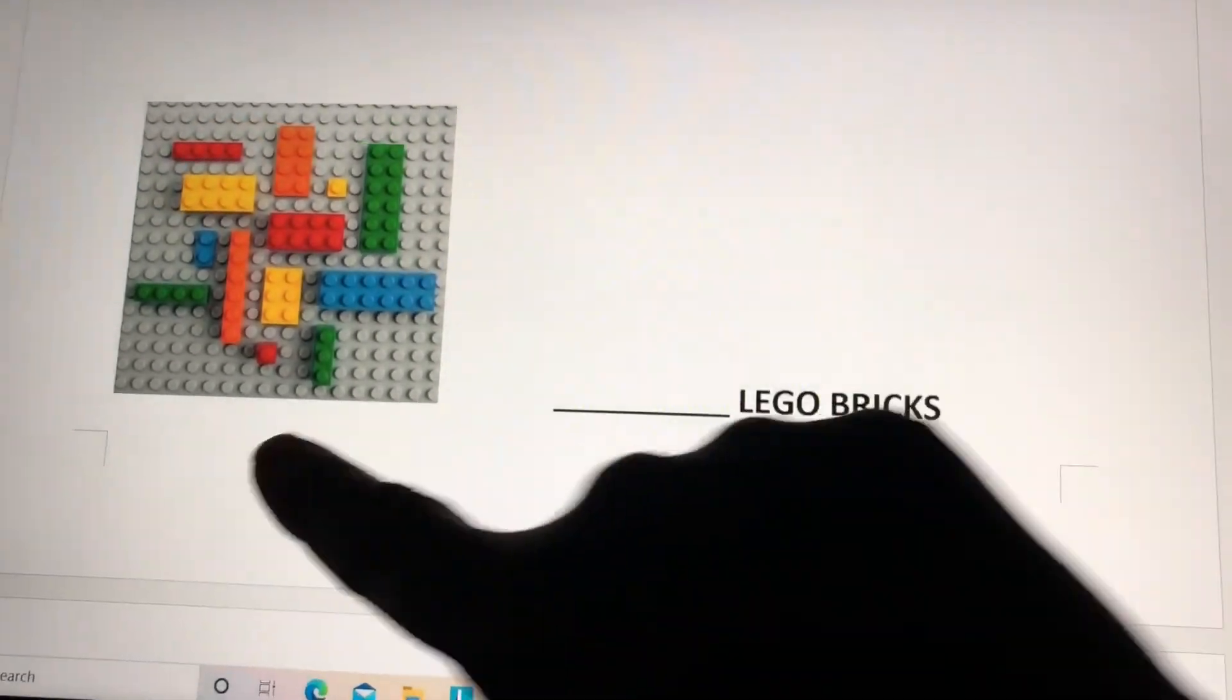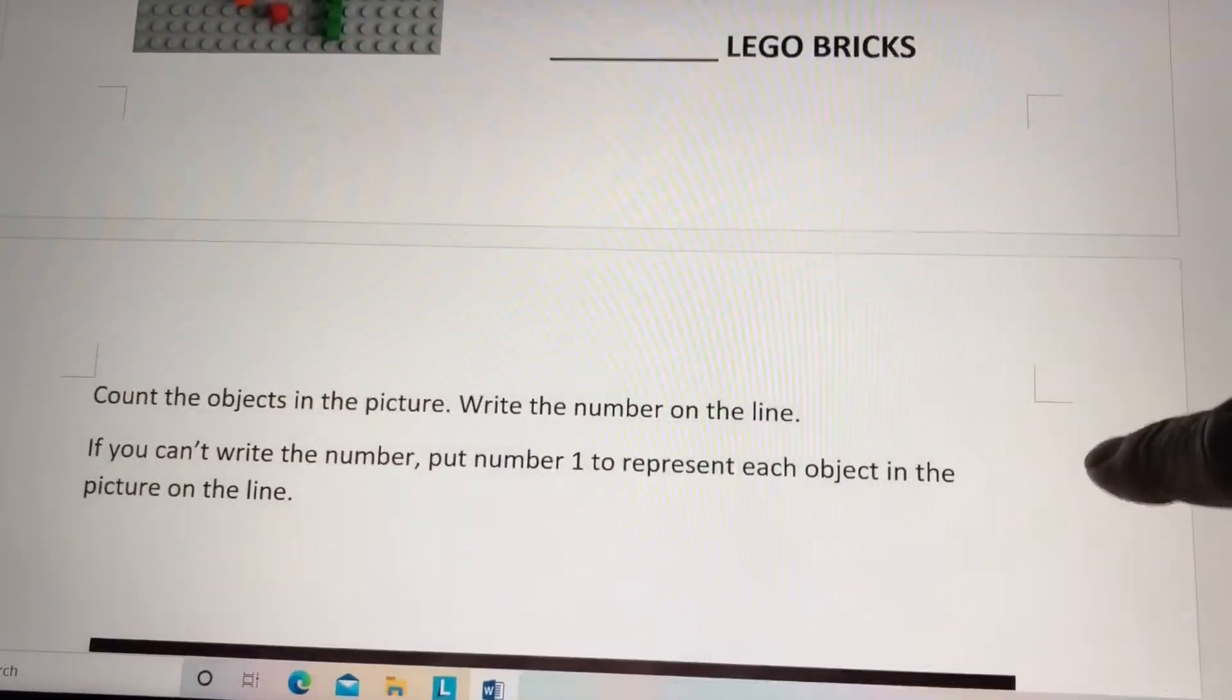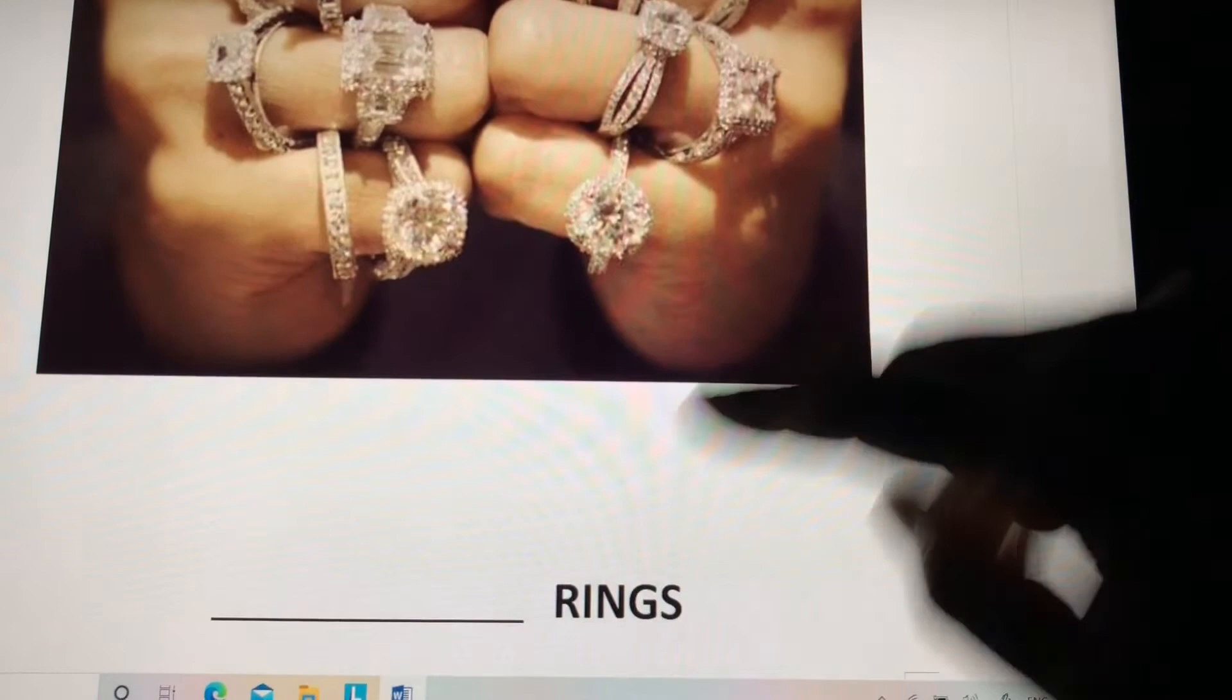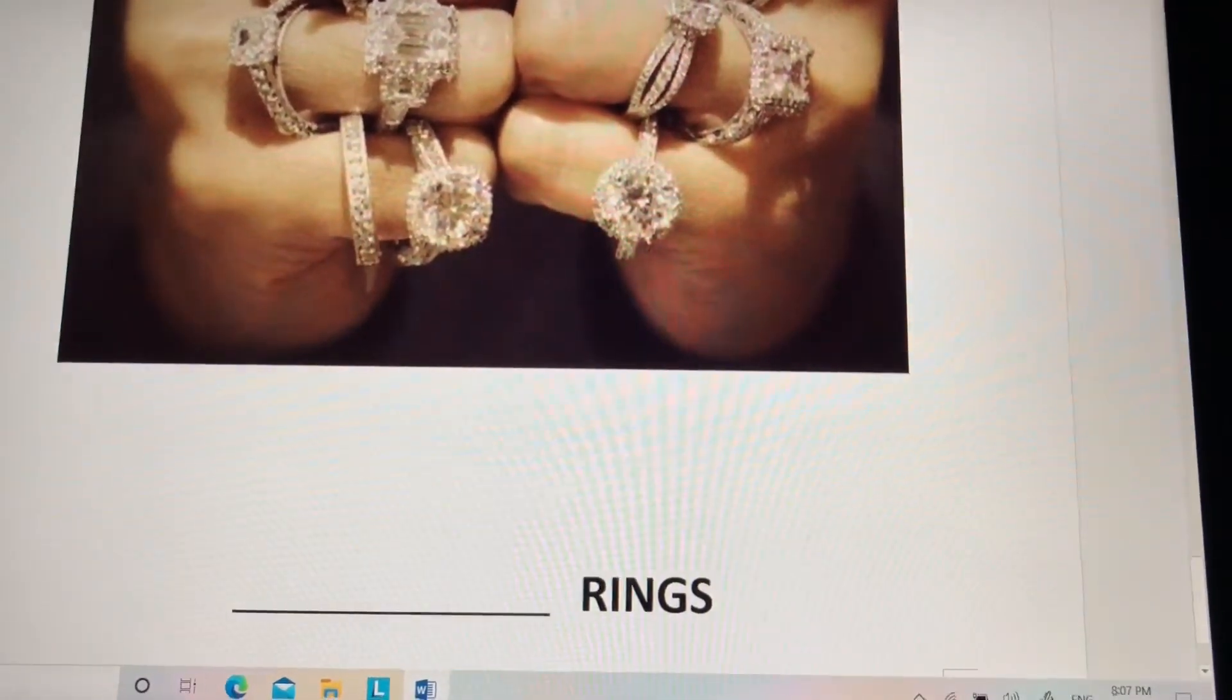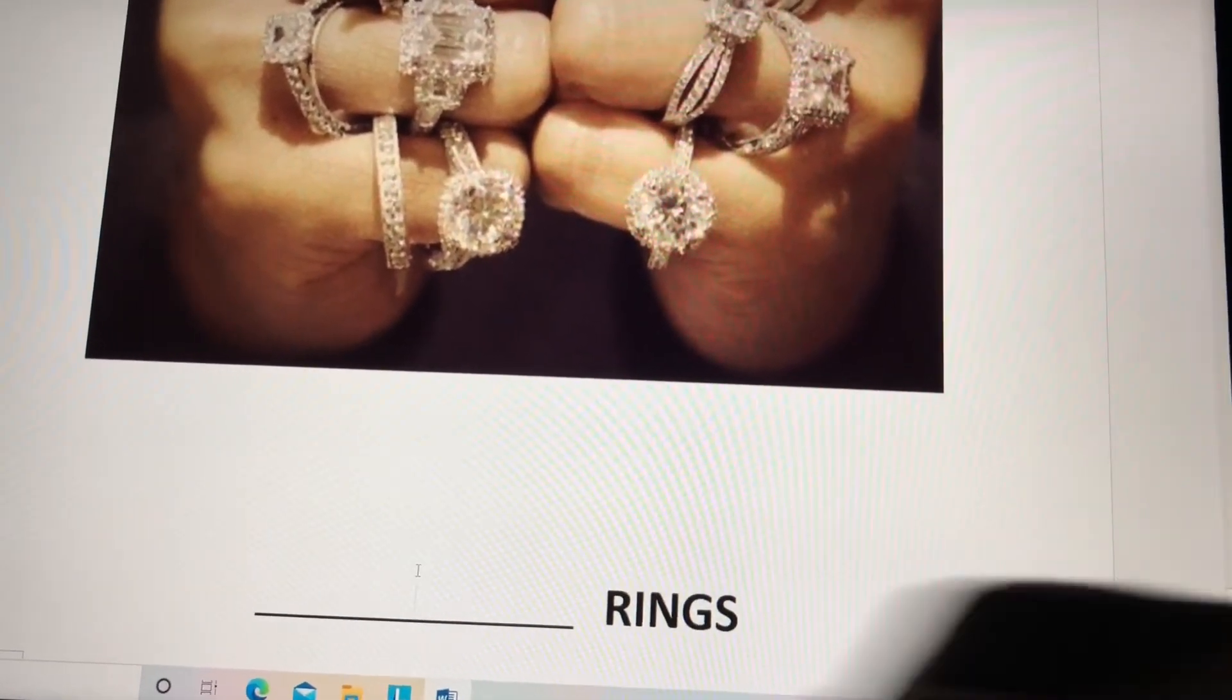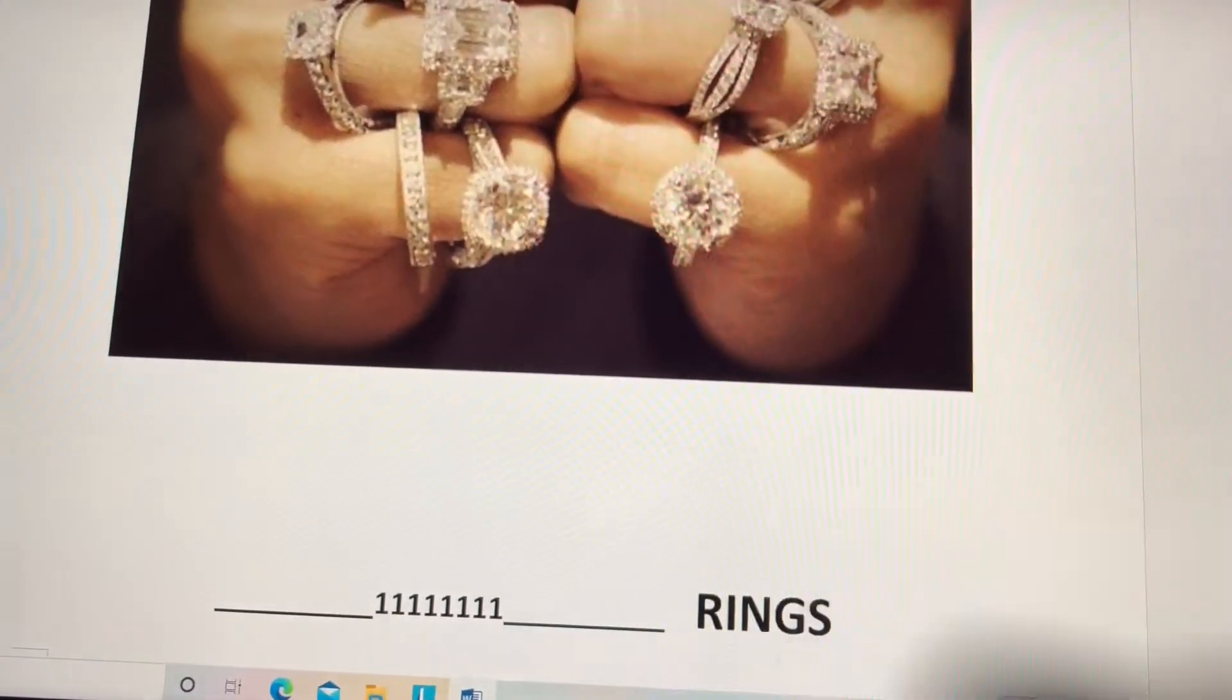Gems, count the gems, put the number there. Lego bricks, how many Lego bricks do you see? Rings, oh wow, how many rings do you see? And put the number there. If you don't know the number, you can always just write on the line the number one to represent how many you see in the picture.